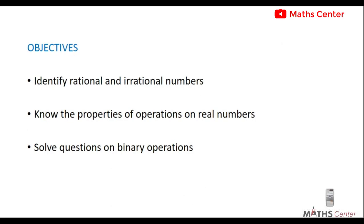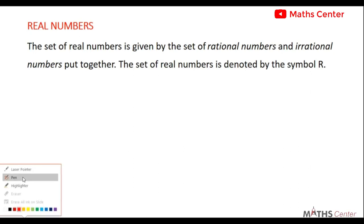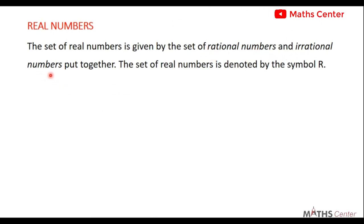The set of real numbers is given by the set of rational and irrational numbers put together. To get the set of real numbers, you need to find what the set of rational numbers are and what the set of irrational numbers are, then put them together.